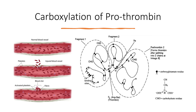Prothrombin is a protein in our blood vessels that helps in blood clotting. The glutamate residue at the end terminal of prothrombin is usually carboxylated to allow binding of calcium ions, which is necessary to initiate blood clotting.